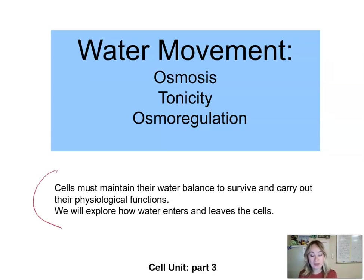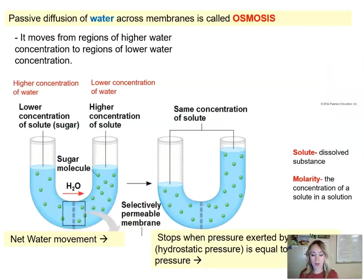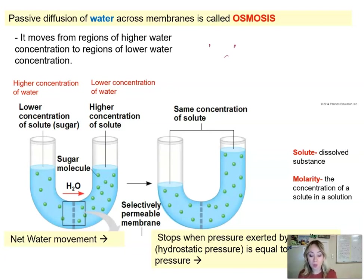Understand that cells must maintain the water balance in order to survive and carry out various physiological functions. Osmosis is defined as passive diffusion of water across the selectively permeable membrane, and water will move from regions of higher water concentration to regions of lower water concentration.